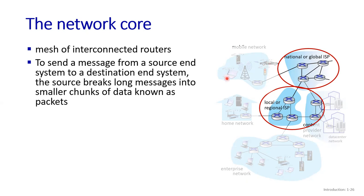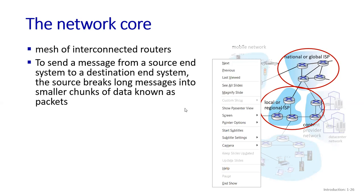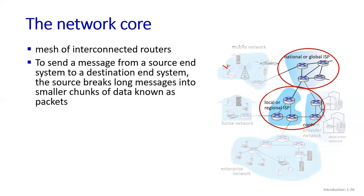To send a message from one end system to another, suppose this end system is the source S and this is the destination D. To send a message from the source end system to the destination end system, the source breaks long messages into smaller chunks of data known as packets. Keep in mind the data can be in image form.